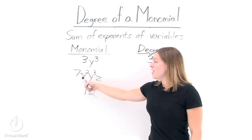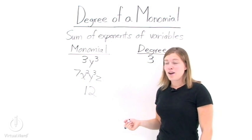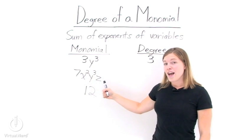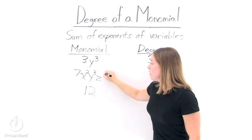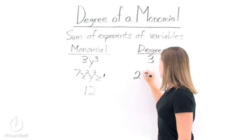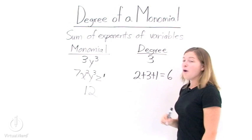Now the next one, 7x squared y cubed z. We have three variables: x squared, y cubed, and z. So we add together their exponents. We have a 2, a 3, and then z has an invisible exponent of 1. So our degree is 2 plus 3 plus 1, or 6.